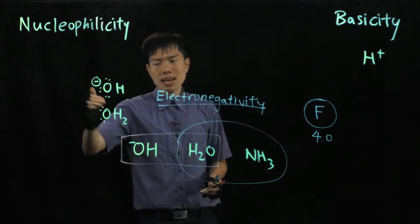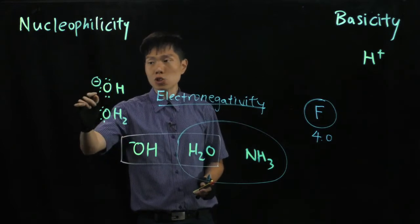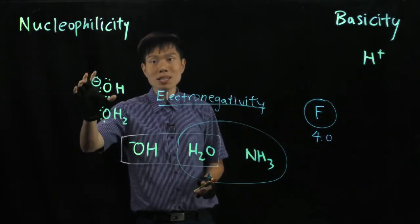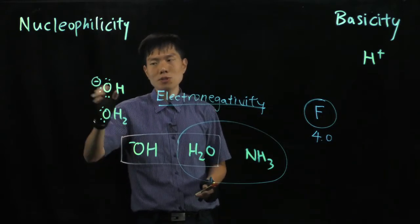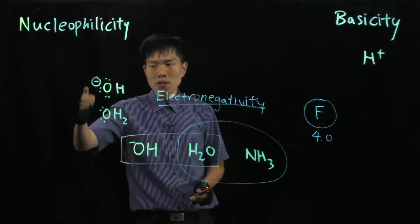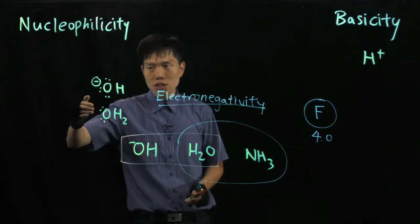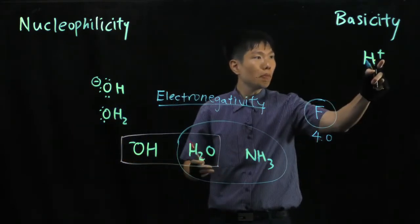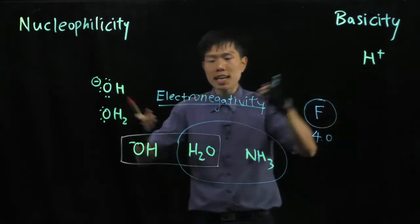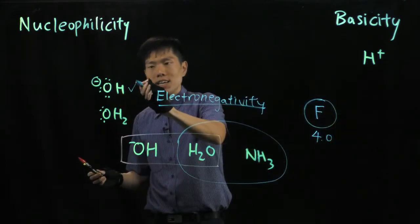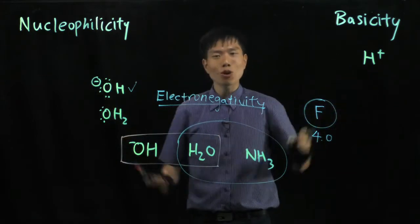Now you compare hydroxide and water. Hydroxide, this oxygen, has a negative charge, which means it has a bit more electron density than the oxygen in water, which means to say that even though both are just oxygen, the negative charge can attract the positive charge better because it's oppositely charged, which means to say that this is a stronger base than water.